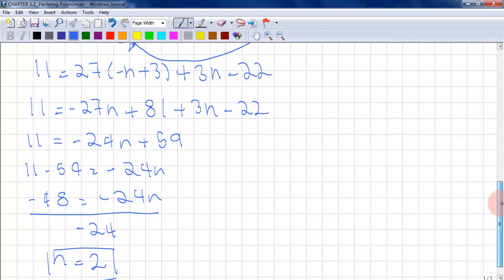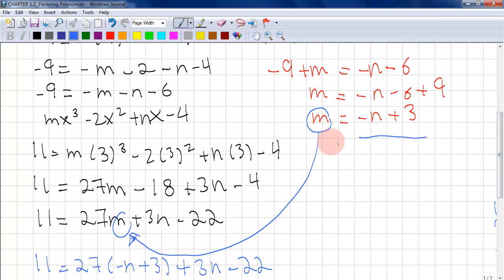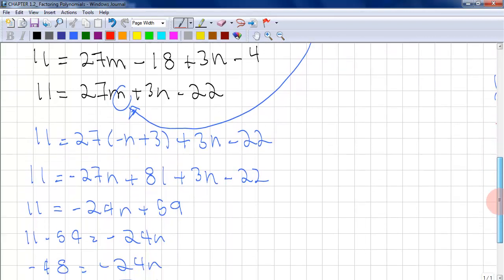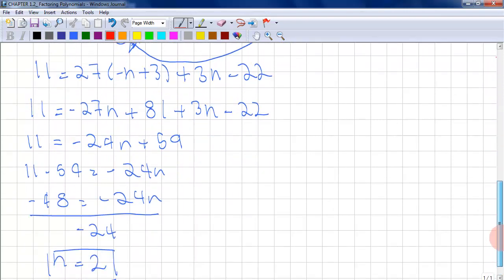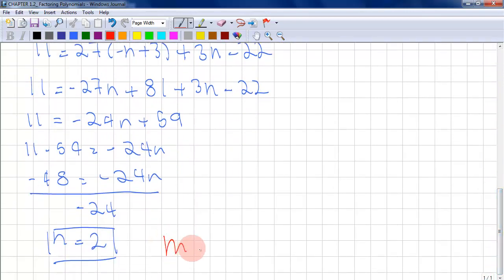So now that we have the n, and we have isolated the n right here, what we can do is plug back in what our n is now that we know it. We're going to use m equals -n + 3. So m would equal -2 + 3, which means m equals 1. So our answers are n equals 2 and m equals 1.